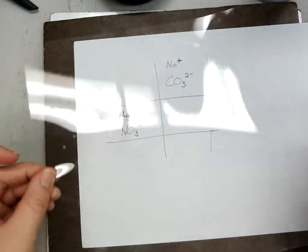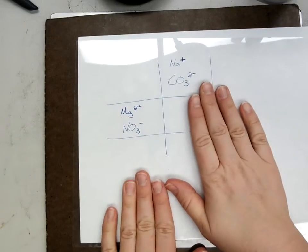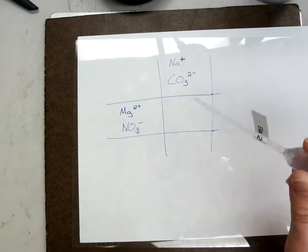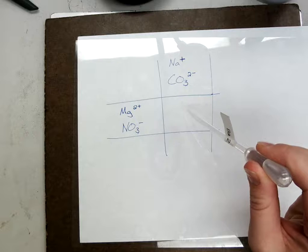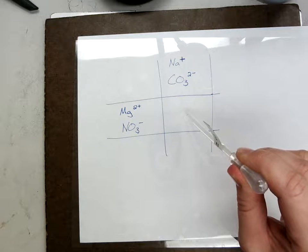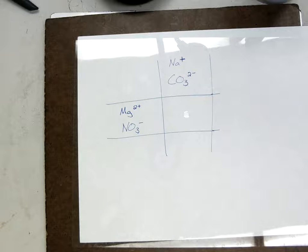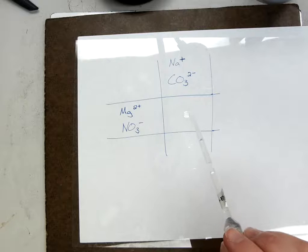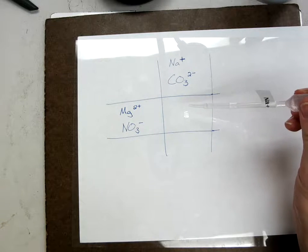You would have taken this and put the plastic sheet over it, and you would have put a drop of sodium carbonate here, aqueous, so nice and clear. And this is not sodium carbonate, I'm cheating, I'm using your chemicals. And then you would have put a drop of magnesium nitrate on top of it, hopefully not cross-contaminating at the same time.